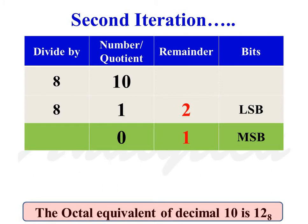During the second iteration, when we divide 1 by 8, we will get quotient equal to 0 and remainder equal to 1. As quotient is equal to 0, the conversion process is complete. The octal equivalent of decimal number 10 is 12. The remainder of the first division forms the LSB and the remainder of the last division forms the MSB.